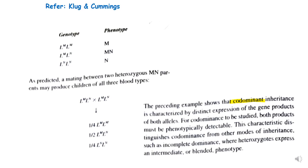MN blood group is an example of co-dominant inheritance where both alleles LM and LN are distinctly expressed, and both gene products are phenotypically detectable. This is why co-dominance is different from other modes of inheritance like incomplete dominance, where the heterozygote expresses an intermediate or blended phenotype.